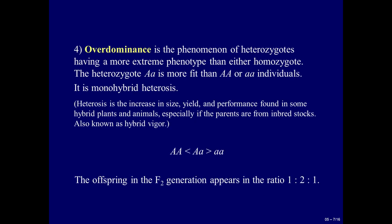The fourth type is over-dominance, a phenomenon where the heterozygote has a more extreme phenotype than either homozygote. The heterozygote (big A, small a) is more fit than (big A, big A) or (small a, small a) individuals. It is a monohybrid heterozygote. Heterozygote advantage refers to the increase in size, yield, and performance found in some hybrid plants and animals, especially if the parents are from inbred stocks — also known as hybrid vigor. The F2 offspring appear in the ratio 1 to 2 to 1.